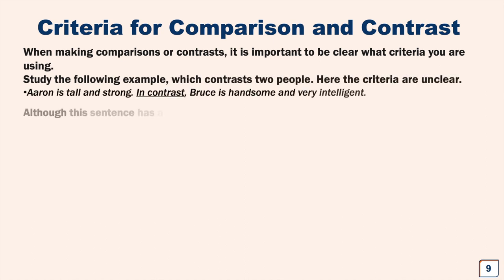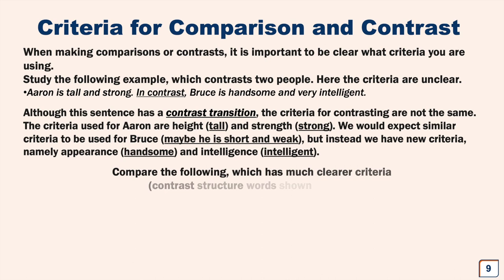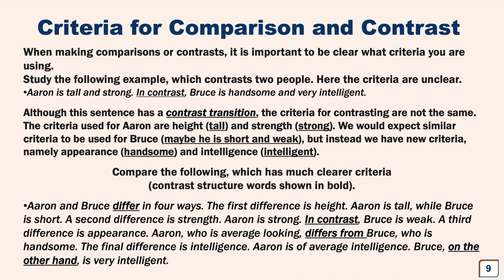Let's take a look at the criteria for comparison and contrast. When making comparisons or contrasts, it is important to be clear what criteria you are using. Study the following example which contrasts two people. Here the criteria are unclear. Aaron is tall and strong. In contrast, Bruce is handsome and very intelligent. Although this sentence has a contrast transition, in contrast, the criteria for contrasting are not the same. The criteria used for Aaron are height, which is tall, and strength, strong. We would expect similar criteria to be used for Bruce. Maybe he's short and weak. But instead we have a new criteria, namely appearance, handsome, and intelligence, intelligent.